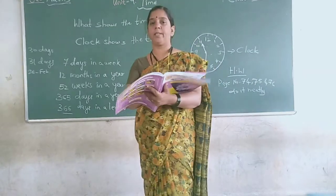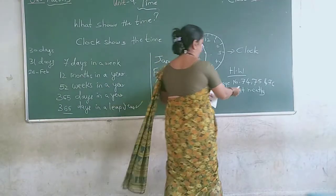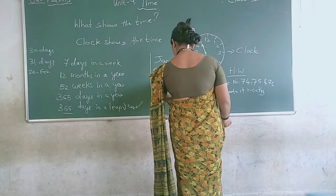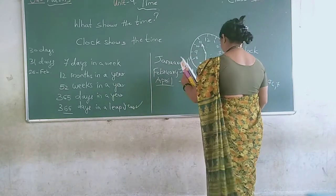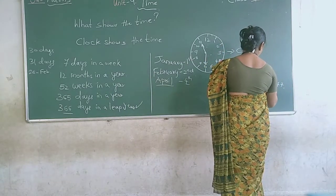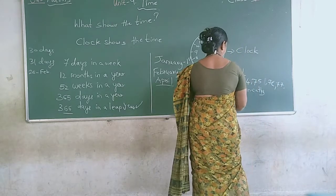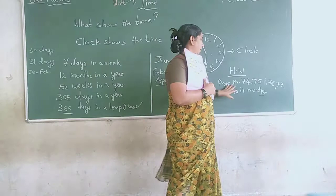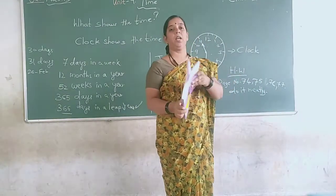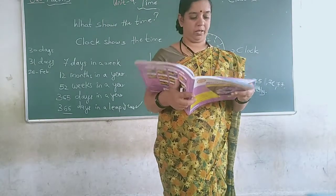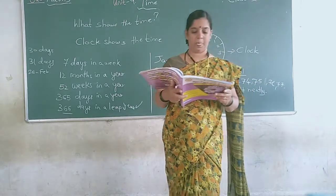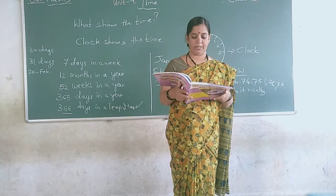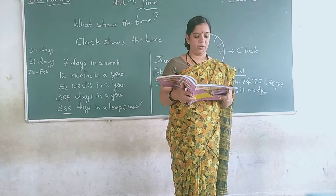Here is the homework part. You have to do pages 74, 75, 76, and 77. With the help of your teacher and parents, prepare a data sheet of the important days of your family, like birthdays, anniversaries, and celebrations. You should make a chart.